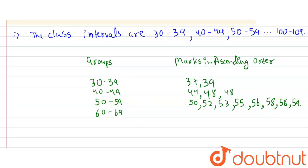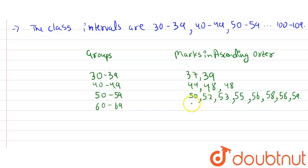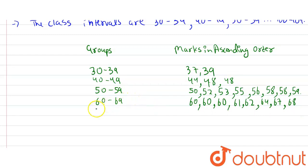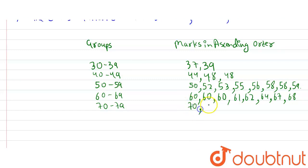The next group is 60 to 69. The marks that lie under this group — there are eight marks: 60, 60, 60, 61, 62, 64, 67, and 68. The next group is 70 to 79, and there are four marks: 70, 75, 77, and 78.